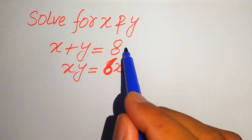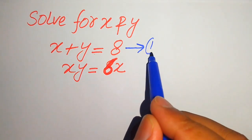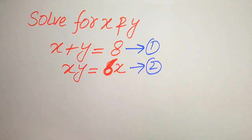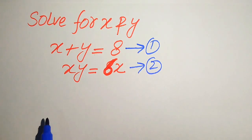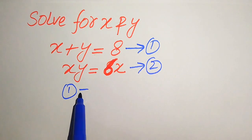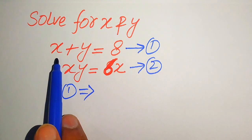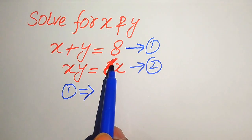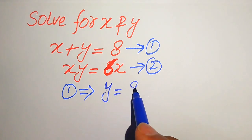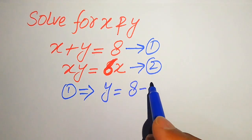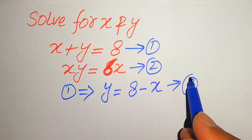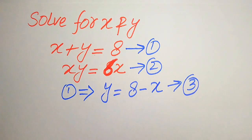Here we call this equation number 1 and this equation number 2. Now, focusing on equation number 1, we move x to the right hand side, so it will be written as y equals 8 minus x, and we call this equation number 3.